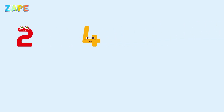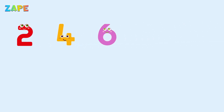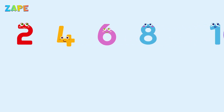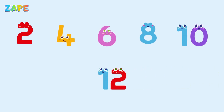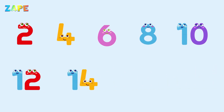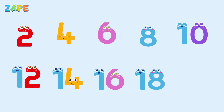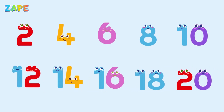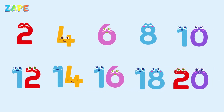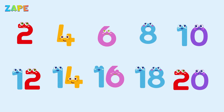2, 4, 6, 8, 10, 12, 14, 16, 18, 20. Well done. That's counting by twos.